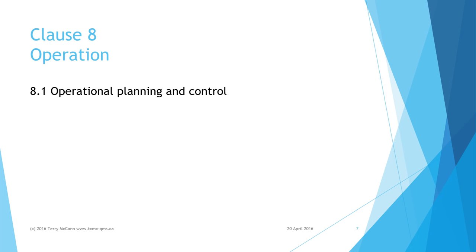Clause 8 is about putting into effect the planning that was done in Clause 6 by actually establishing your EMS processes and controlling how they operate. This includes having to control outsourced processes and controlling things like transport, delivery, and disposal where these might have environmental aspects.